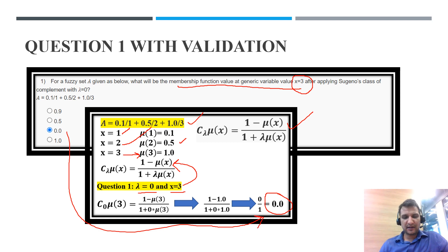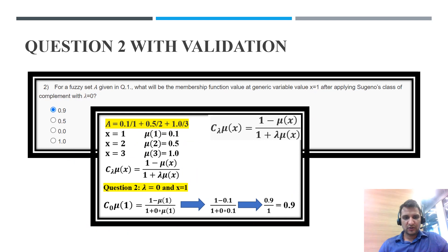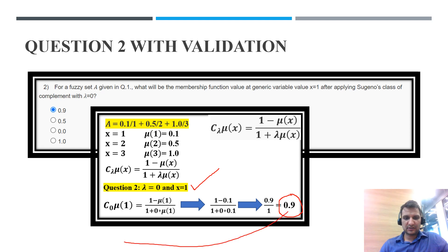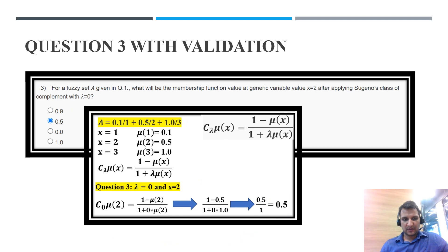In the same fashion, we just change the values of lambda and x to get each answer. Question 2: lambda equals 0 and x equals 1. When we put these values into the formula, the result is 0.9. So option A is the correct answer for Question 2.